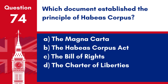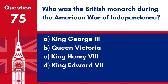Question 74. Which document established the principle of habeas corpus? a. The Magna Carta. b. The Habeas Corpus Act. c. The Bill of Rights. d. The Charter of Liberties. Answer: b. The Habeas Corpus Act. The Habeas Corpus Act of 1679 established the principle that someone under arrest must be brought before a judge or into court.